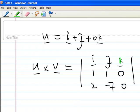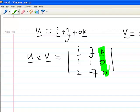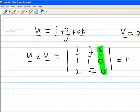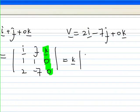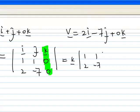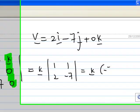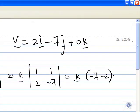Now we can expand this three by three determinant using a row or column. We select the third column to expand. This will give you k times the two by two determinant (1, 1; 2, -7). Expanding, this equals k times (-7 - 2), which is -9k.